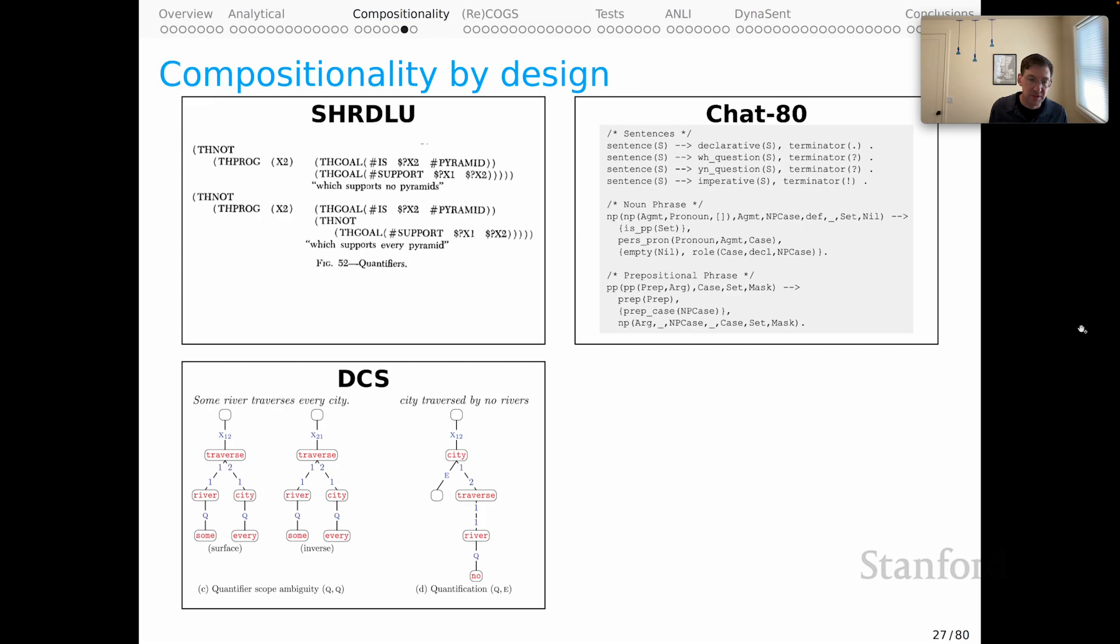And parts of that actually did carry forward into the more modern machine learning era. For example, many semantic parsing systems, like this one depicted from Percy Leong's work, were also compositional in the sense that underlyingly there was a compositional grammar and the task was to learn weights on the rules of that grammar. And so arguably the resulting artifacts were compositional with some stochasticity associated with them being probabilistic models.